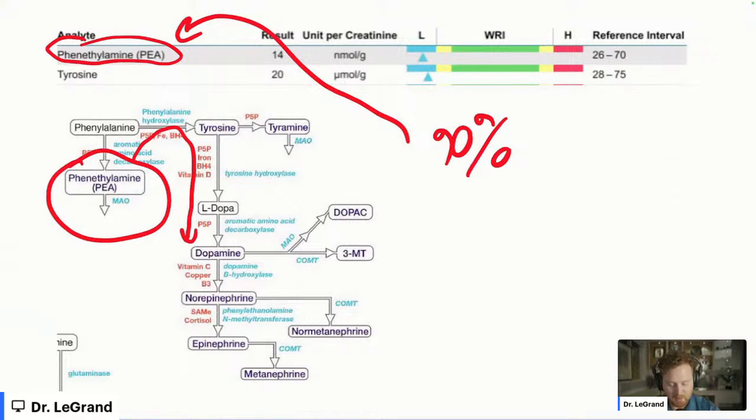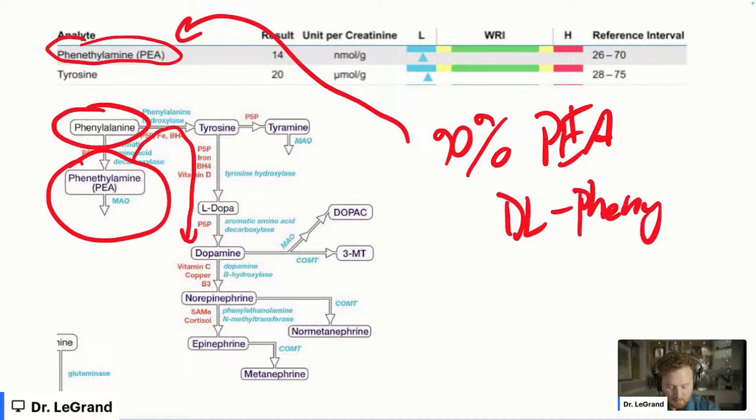So typically, I'll recommend either straight up PEA, so phenylethylamine, or DL-phenylalanine, which is the amino acids that specifically helps build PEA. It also helps build tyrosine. It actually helps make tyrosine. So that was the other thing.